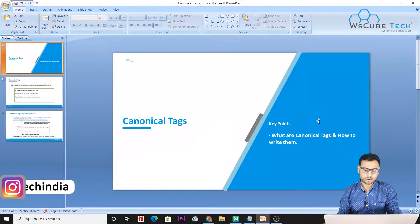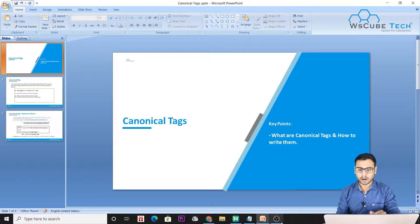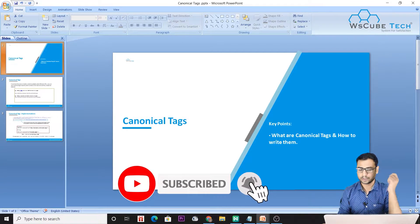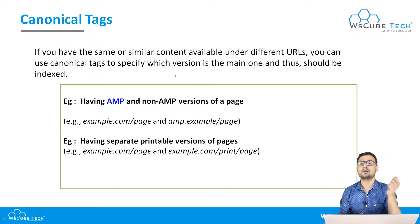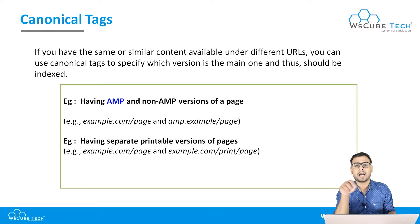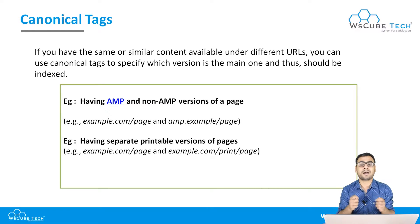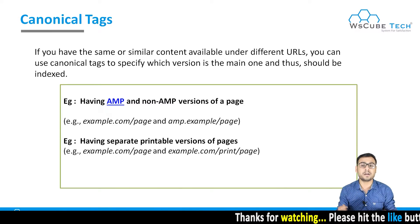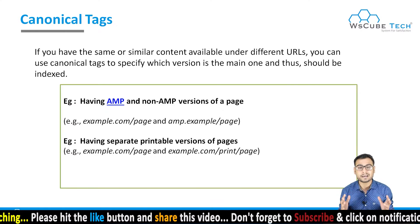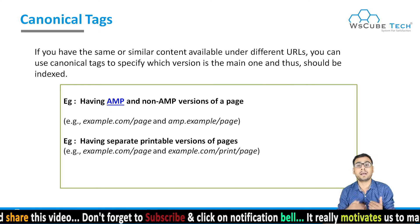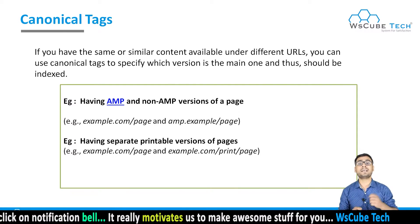First, let us understand the problem that canonical tags are going to solve for us. If we come to the definition of canonical tags — if you have same or similar content available under different URLs, meaning if you have a website with different pages at different URLs, and you have the same kind of content on those different URLs, then there is a condition of duplicate content, which we do not want. You cannot make Google index the duplicate content, or index two pages which have the same content.